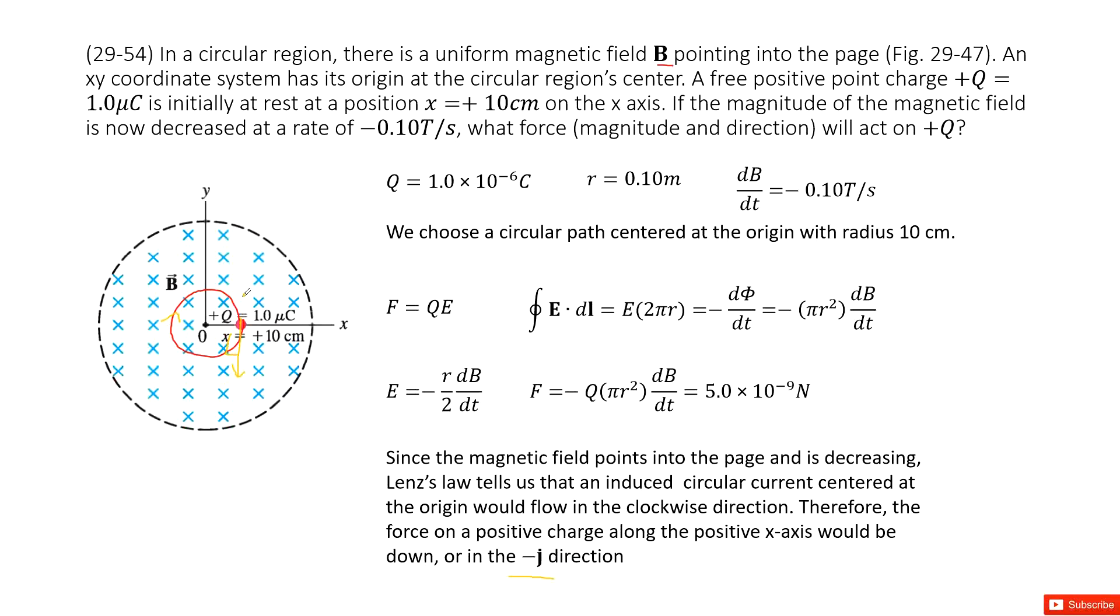Now we need to calculate the magnitude for this force. So now we can see this is Faraday's rule. The integral of E dot dL around this circle is 2πr equal to negative dΦ/dt.